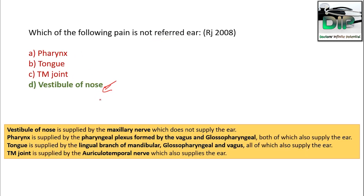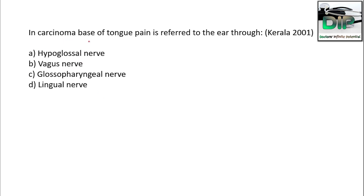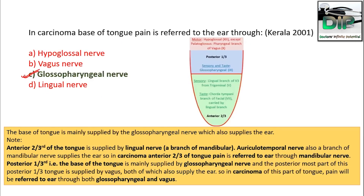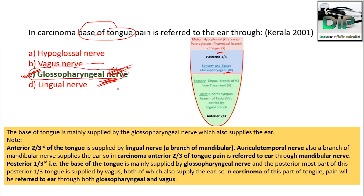In carcinoma of the base of the tongue, pain is referred to the ear through which nerve — hypoglossal, vagus, glossopharyngeal, or lingual? The correct answer is glossopharyngeal. The posterior part of the tongue is mainly supplied by the glossopharyngeal nerve, so pain is referred via glossopharyngeal, although both vagus and glossopharyngeal supply the posterior one-third.